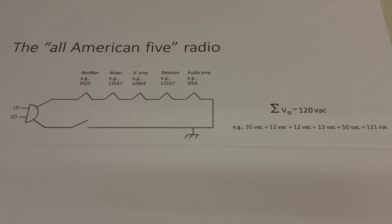This is known today as the All-American 5 design. The way manufacturers were able to avoid using a costly power transformer was by designing a circuit for a superheterodyne receiver that only required a small number of tubes, and the tubes were picked so that their filament voltages added up to a value just in the neighborhood of the line voltage for the United States.